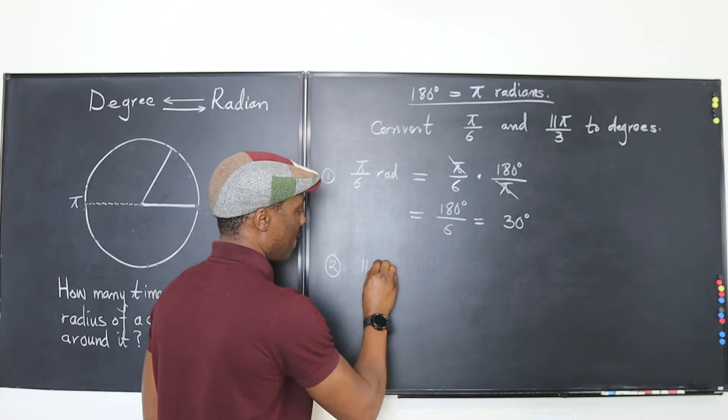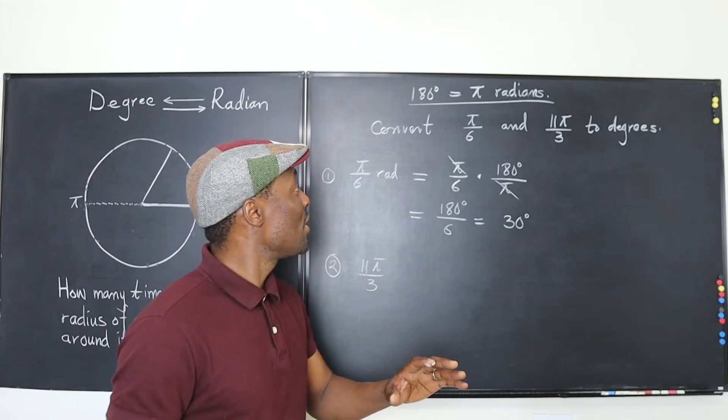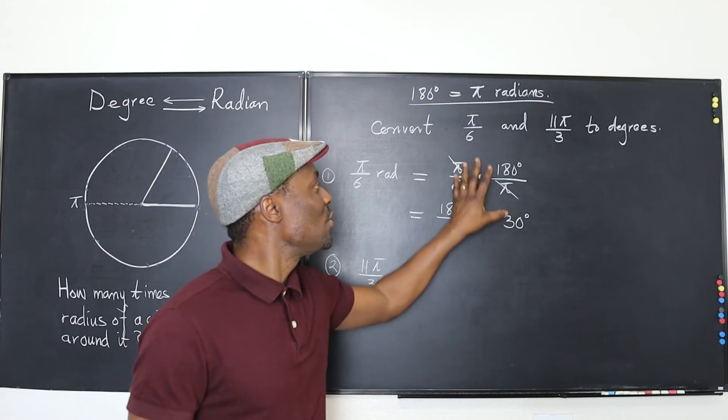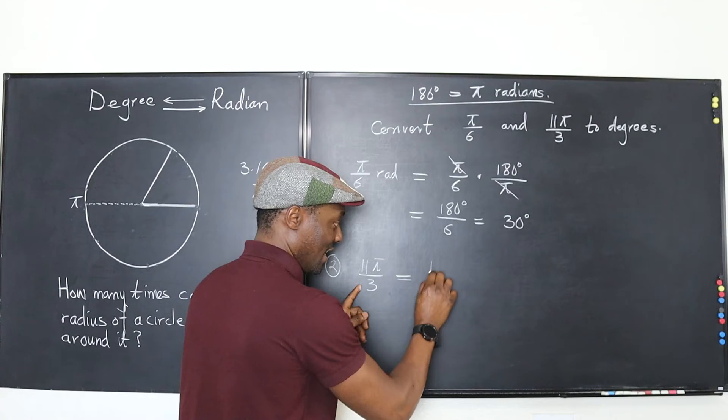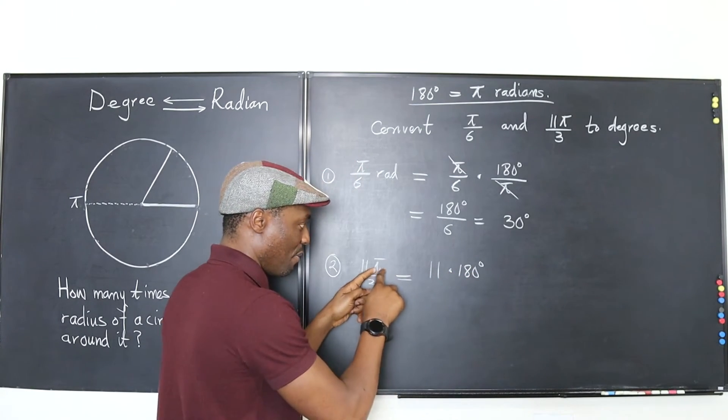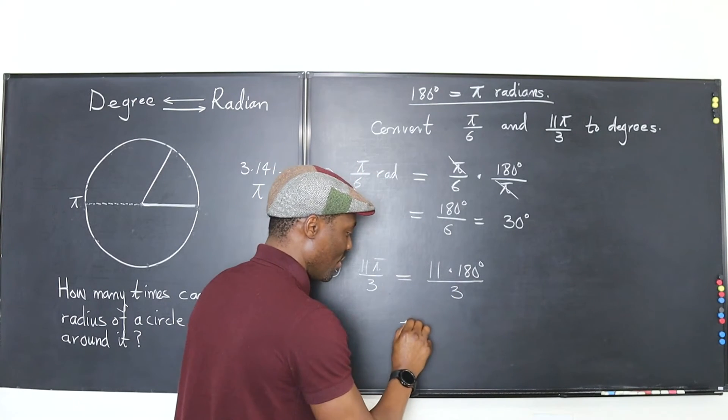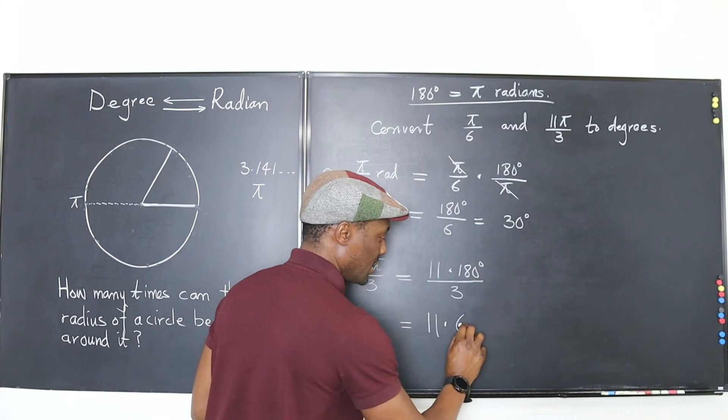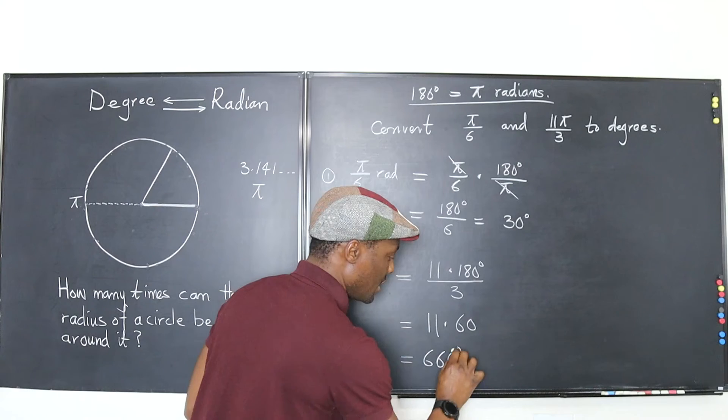For the second one, it's 11 pi over 3. And another way, I just know, because remember I told you that pi is the same as 180 degrees. I don't even do this kind of multiplication. I just rewrite it. I just write this as 11 times 180 degrees because I know pi is 180 degrees and I divide it by 3. So I'm just going to have 11 multiplied by 60, which is equal to 660 degrees.